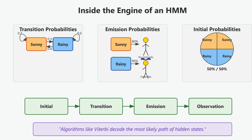Once we have all these, we can use algorithms like the Viterbi algorithm to figure out the most likely sequence of hidden states, even if we only see the observations. This is how tools like speech recognition, part-of-speech tagging, and even DNA sequencing work — they use HMMs to uncover the hidden layers behind what we observe.